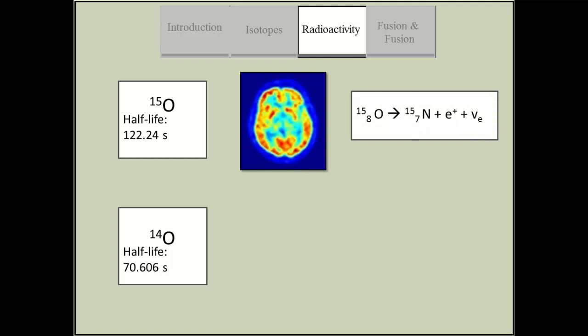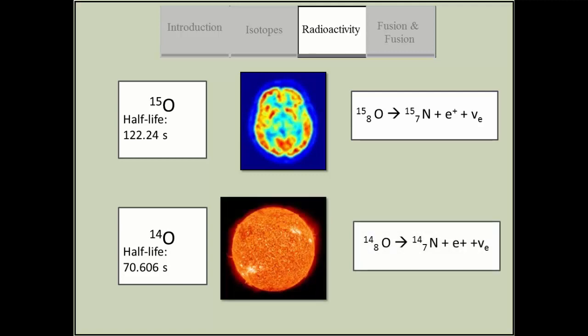Oxygen-15 is used in nuclear medicine in positron emission tomography, or PET scans, and Oxygen-14 is found in a set of nuclear fusion reactions in stars called the carbon-nitrogen-oxygen cycle.